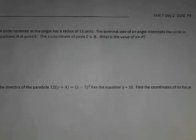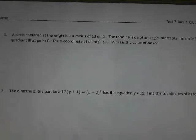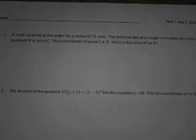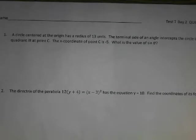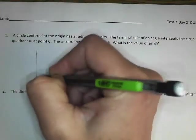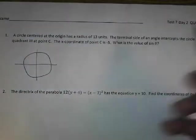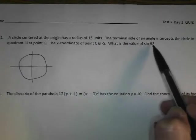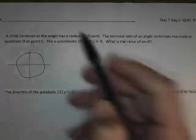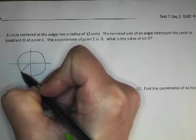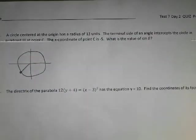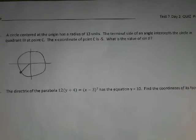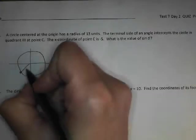Alright, so on this first one, anytime you're given a terminal ray in a quadrant, this sort of thing, definitely draw a picture. So your circle centered at the origin, has a radius of 13, we'll get to that. The terminal side intercepts the circle in quadrant 3, so there's your quadrant 3. When you draw that terminal ray, that's your radius, so that is 13.